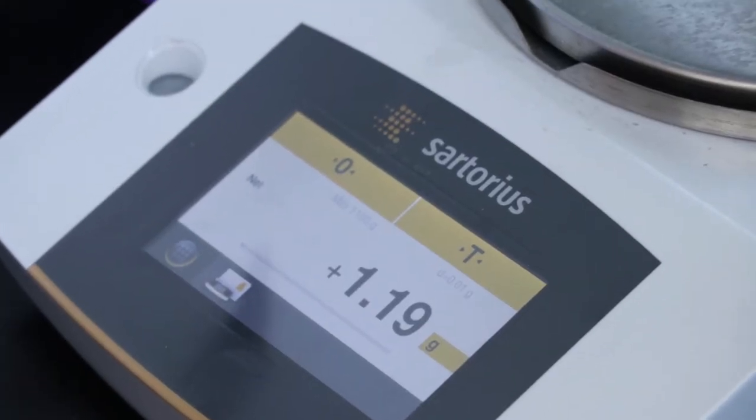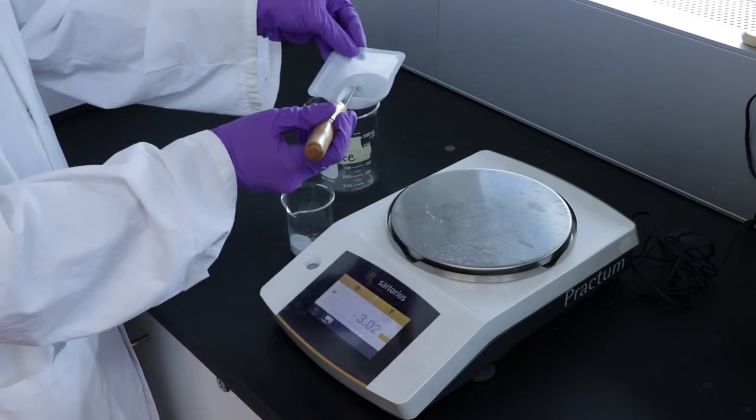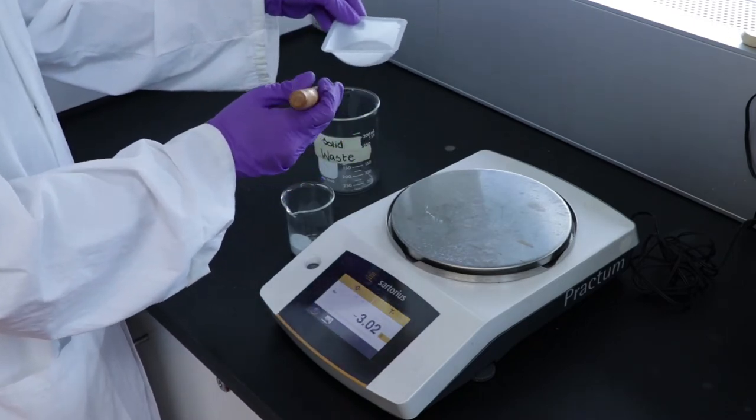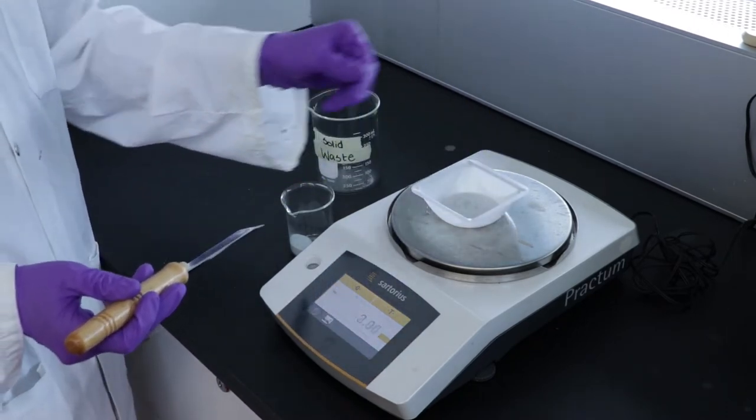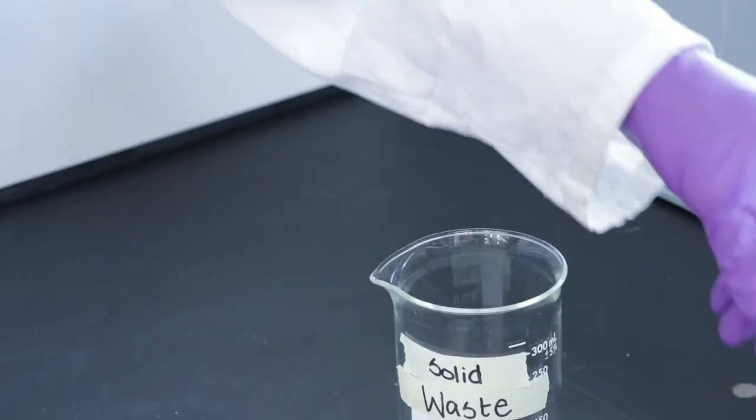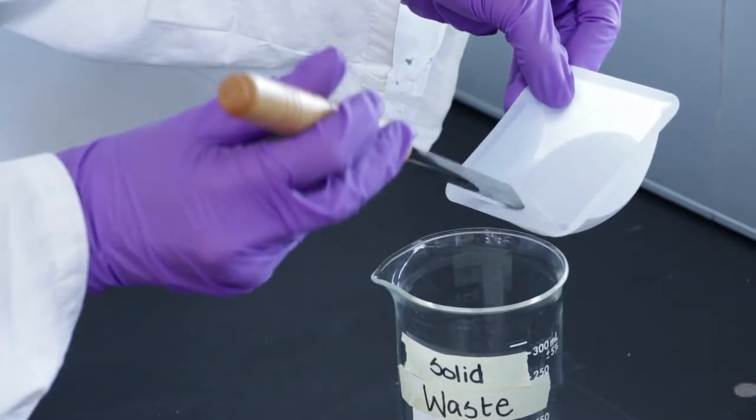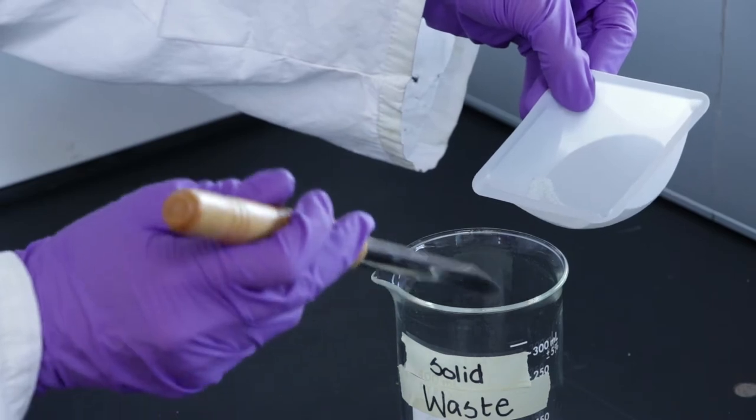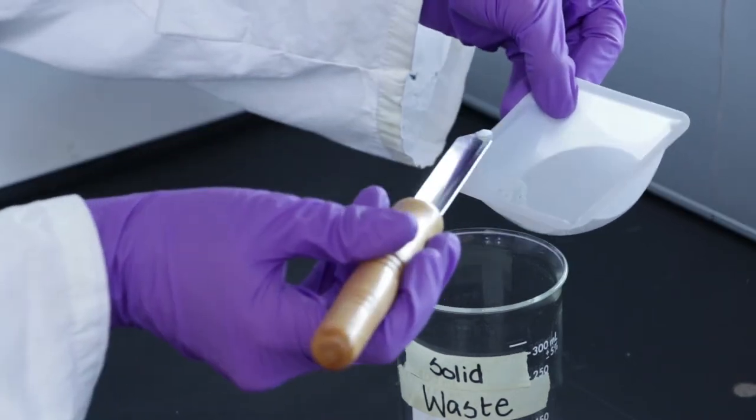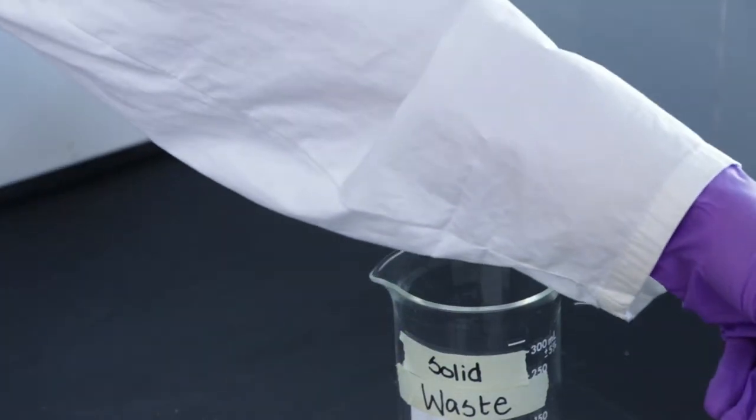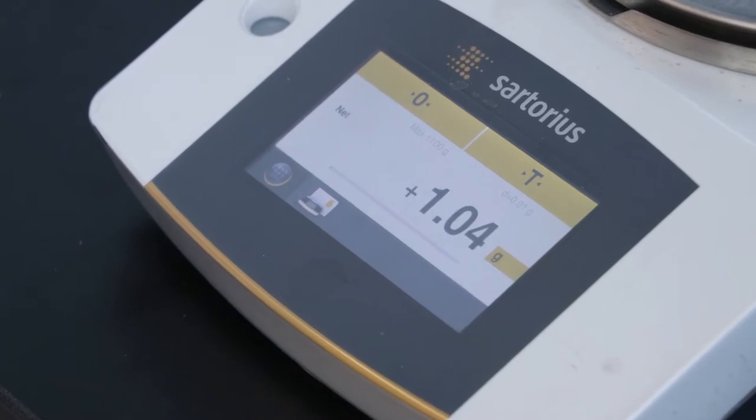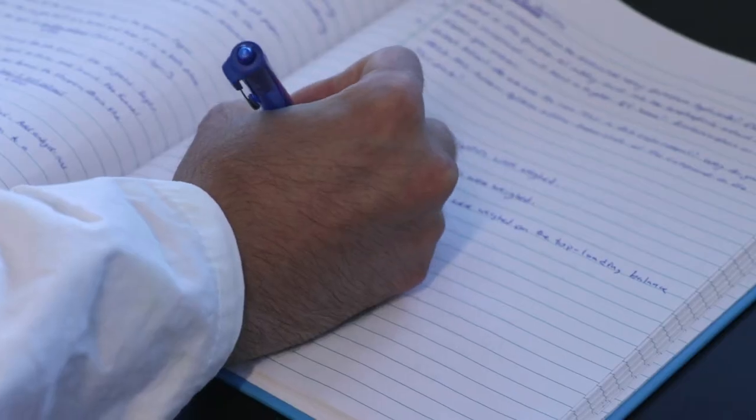Add approximately 1 gram of the reagent to the weighing boat. The mass does not have to be exact. If your mass is different by 5%, which in this case is 0.05 grams, then that is acceptable. If you add too much dispose of the excess solid in the solid waste beakers located next to the balances. Make sure to record the final mass in your notebook.